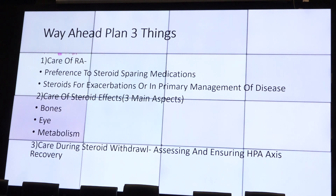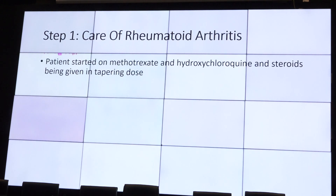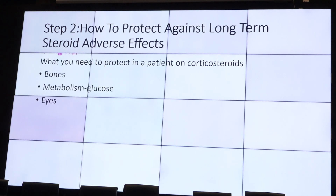The disease needed treatment, but we also needed a plan to remove the problematic part of the treatment. She definitely needed both. The rheumatologist agreed to put her on disease-modifying medication — methotrexate and hydroxychloroquine — and said prednisolone was needed only for three to four weeks, after which we could decide together. She needs care of three main things: bone, eye, and metabolism, as well as care during steroid administration and steroid withdrawal to prevent a crisis.